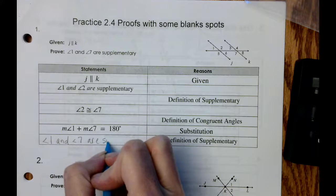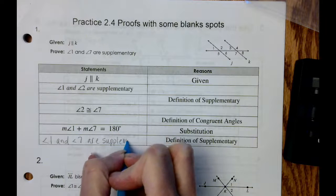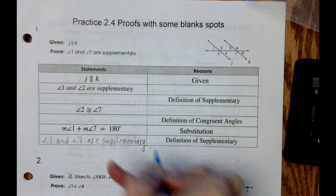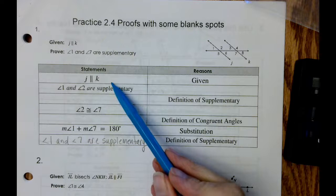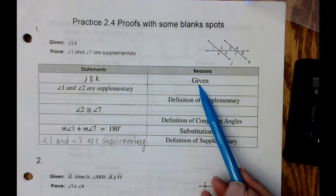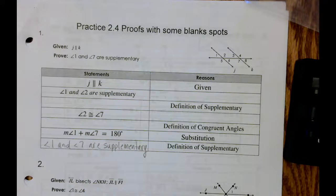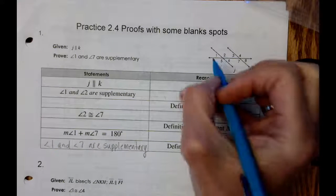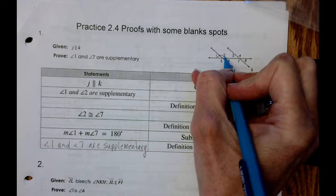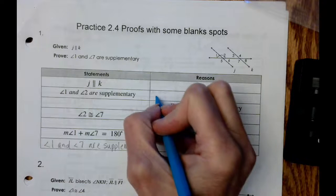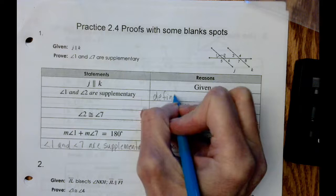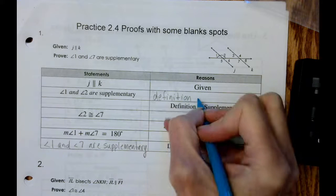Our original statement is that j is parallel to k, and that's given. The first statement in this proof is that angle one and angle two are supplementary, and the reason we can say that is the definition of supplementary.